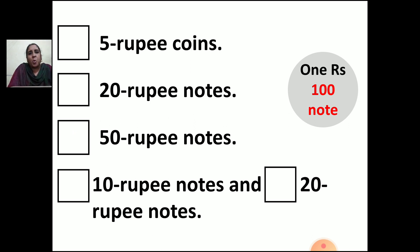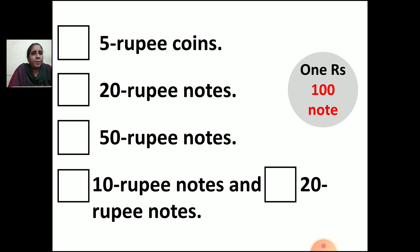Now let us see the next question. To make a 100 rupee note, what will you do? How many 5 rupee coins should you have? How many 20 rupee notes? How many 50 rupee notes? How many 10 rupee notes and 20 rupee notes? Let us start with the first — dash 5 rupee coins. How many 5 rupee coins will you take to make 100 rupees? In the table of 5, you need 25 five-rupee coins to make 100 rupees.